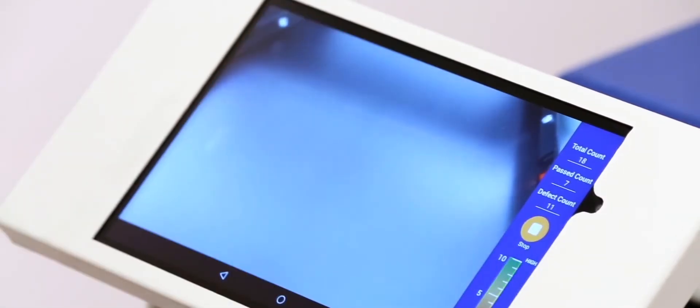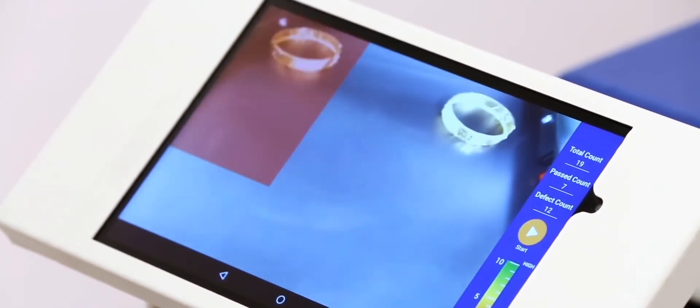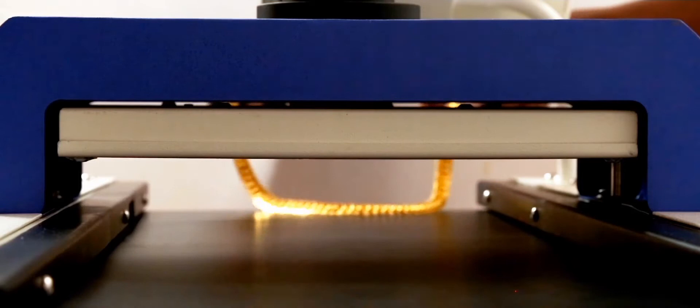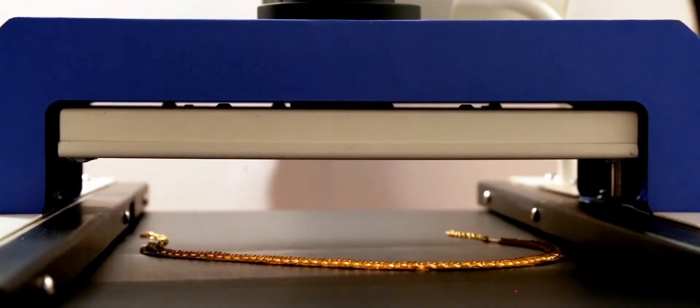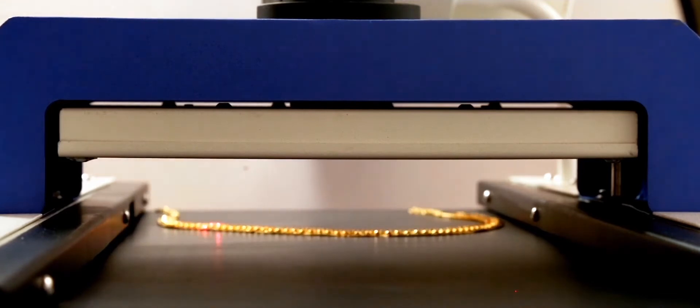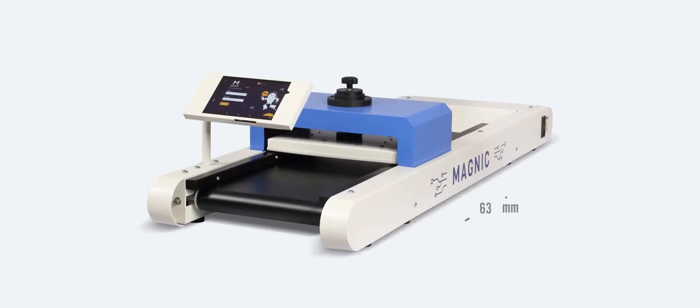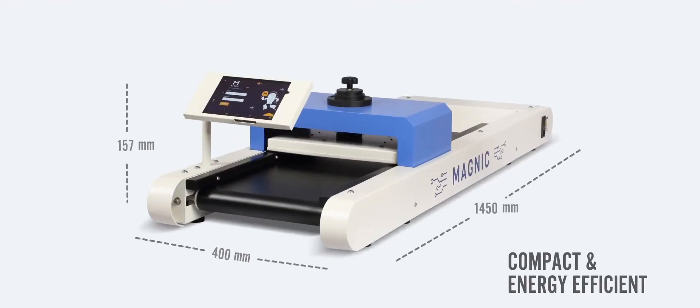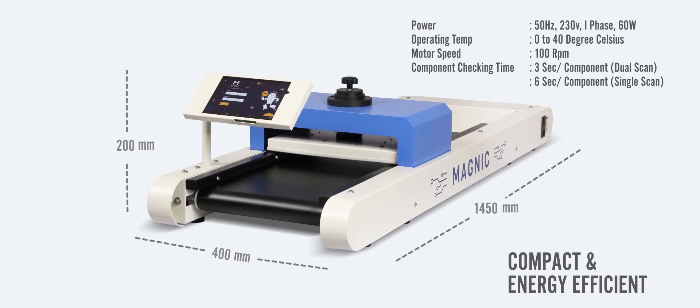User-friendly Android-based touch screen display with camera shows the exact area of a ferrous pin. Fitted with an ultra-sensitive sensor, it detects even the minutest ferrous pin in a jewellery. The entire machine is simple to set up, compact and highly energy efficient.